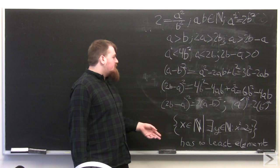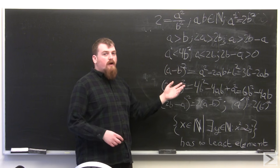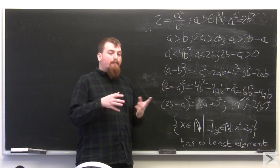This in turn means that for every a squared equals 2b squared, there's an a prime squared equals 2b prime squared, where a prime is less than a.